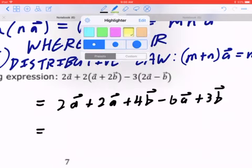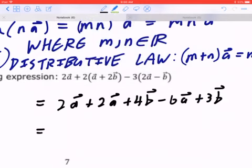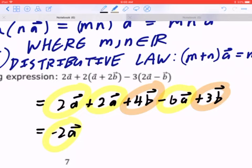Again, here comes the final answer. We're going to collect like terms. With a lot of practice, you can do all this mentally. I'm still going to circle them for you so you can see exactly where these answers came from. So, 2 plus 2 minus 6 is negative 2a. Likewise, if you look at 4 plus 3, that's going to give you 7. So, the final answer is going to be negative 2a plus 7b.